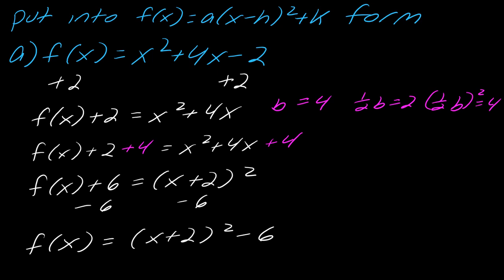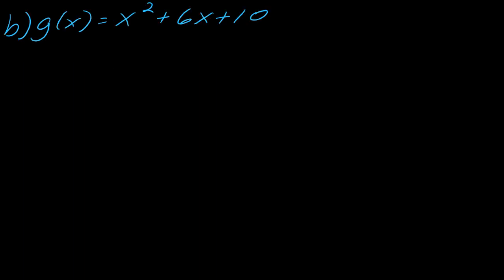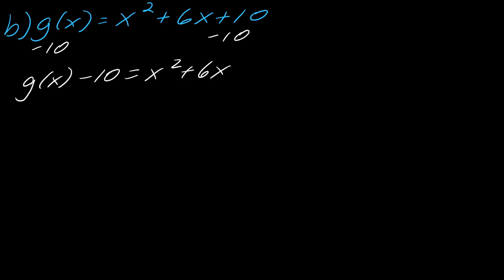Now I have three examples here for you to try on your own. I'd highly recommend pausing the video and trying these, then hit play when you're ready to see the solutions. Starting with b: first I need to isolate the x terms, so I need to subtract off the 10. I've got g(x) minus 10 equals x squared plus 6x.